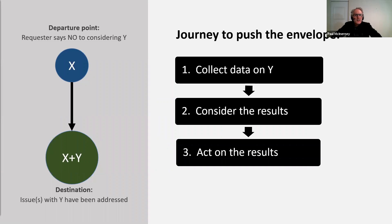The approach I take is to think of this as a journey of three steps. First, try to get agreement from the requester that it's okay to collect data on Y — that the world will not end if we collect data on Y. Then, once we have the data, get them to consider the results and agree on what they're telling us. And finally, to act on the results. I'll illustrate this journey with a couple of case studies.